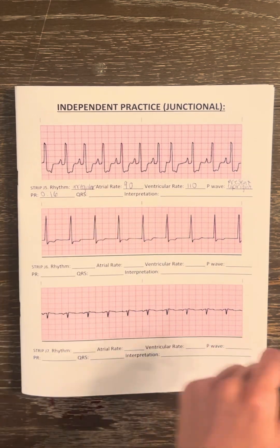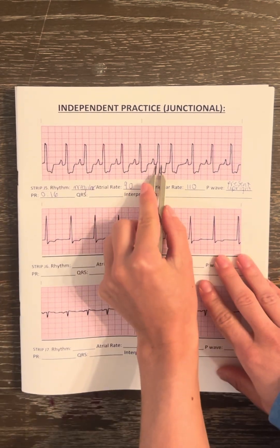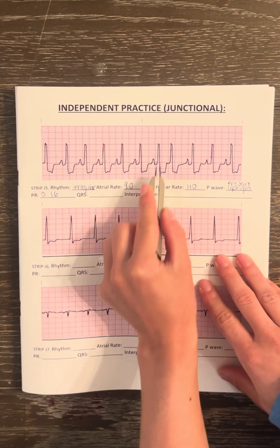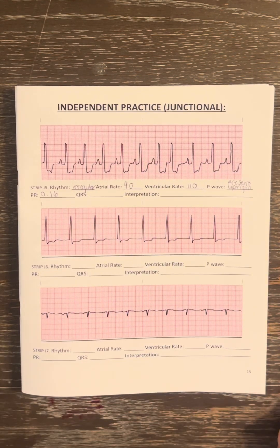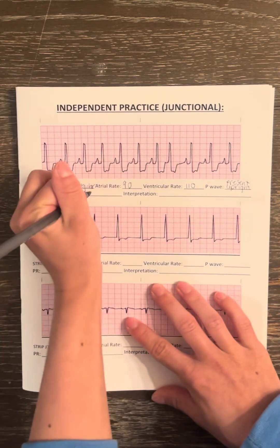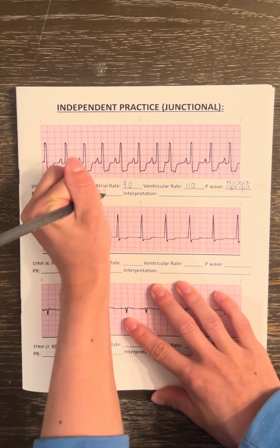Now for the QRS. That's about two boxes, so we have 0.08.